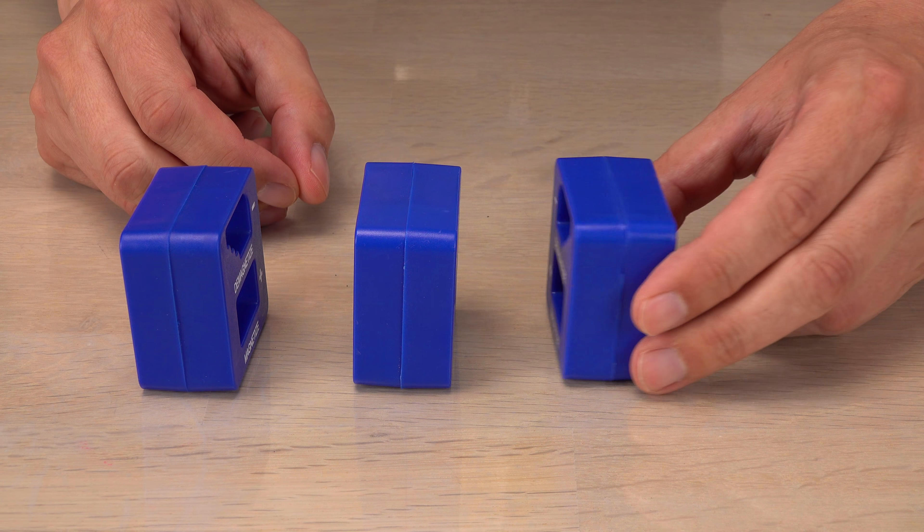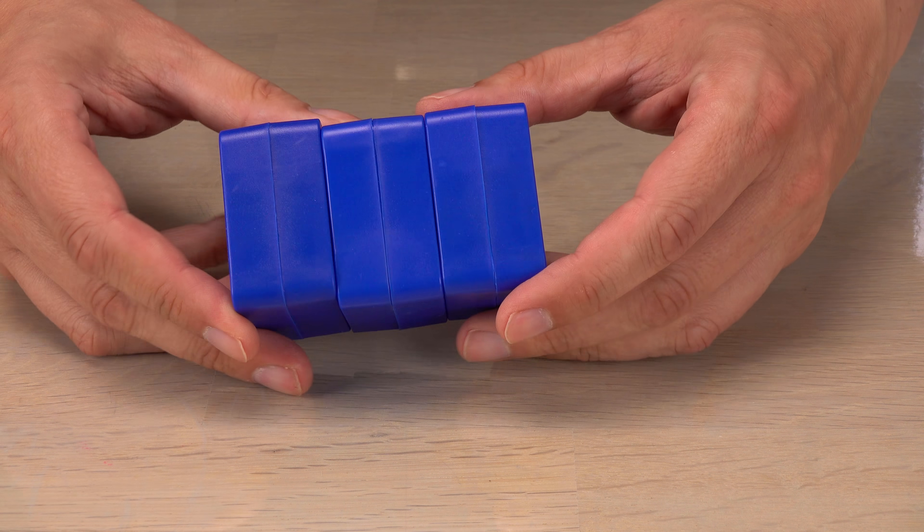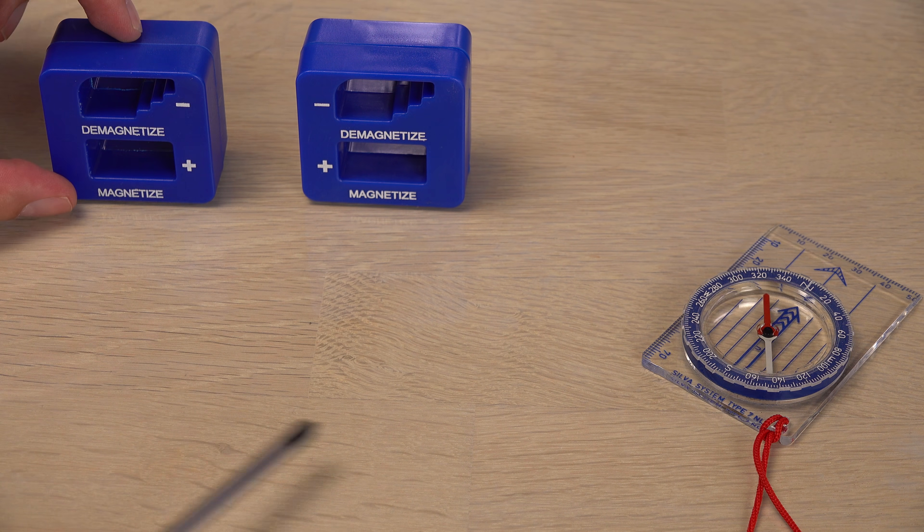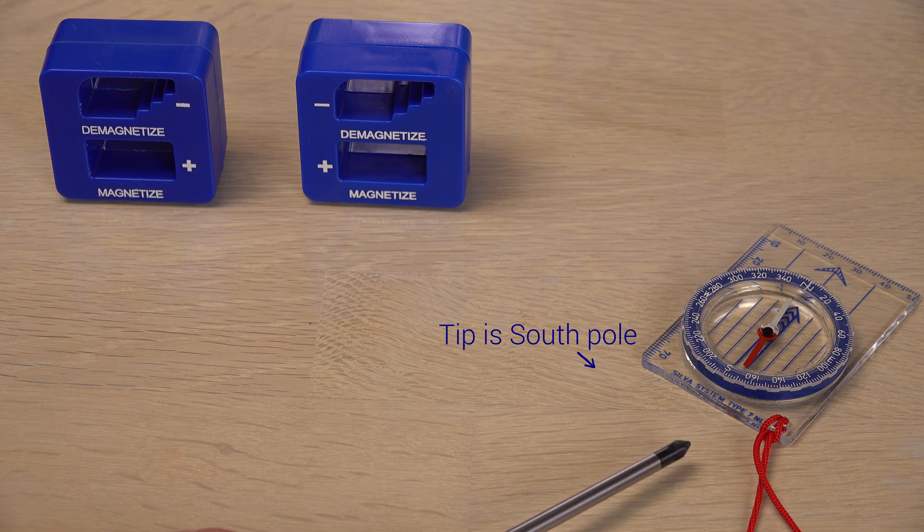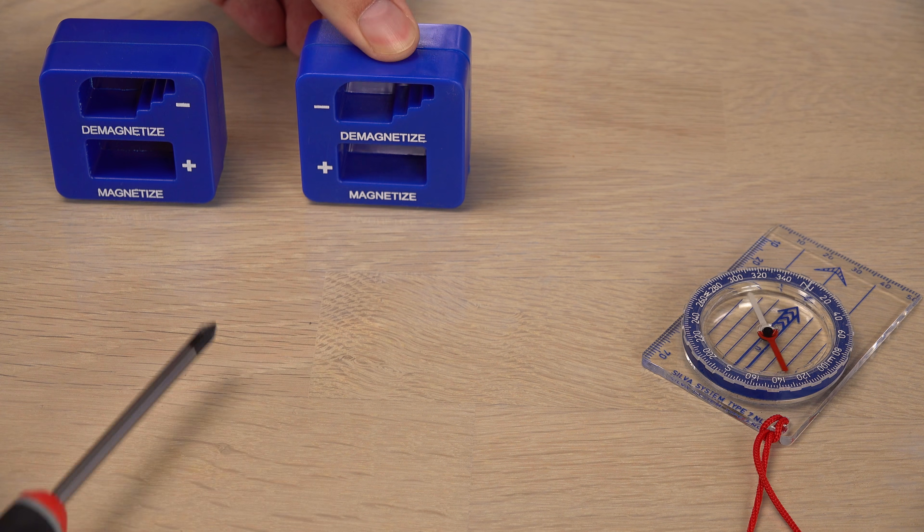If you are used to handling cube magnets or watched my old buyer's guide for neodymium magnets, this is a big clue. One type makes the screwdriver's tip a magnetic south pole. Remember, opposite poles attract. The other makes it a north pole.